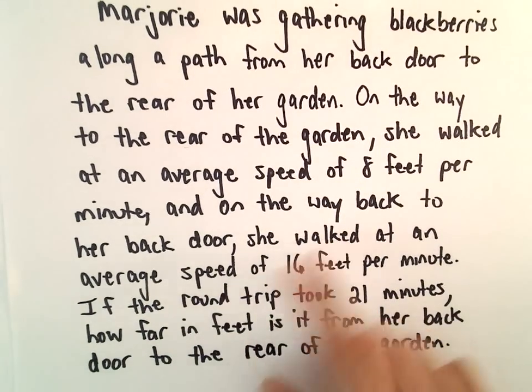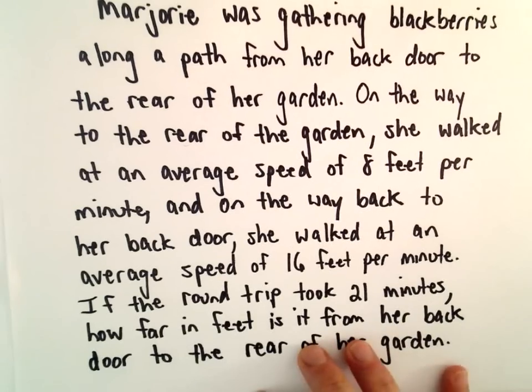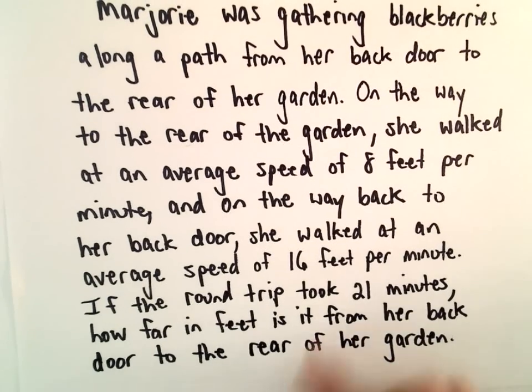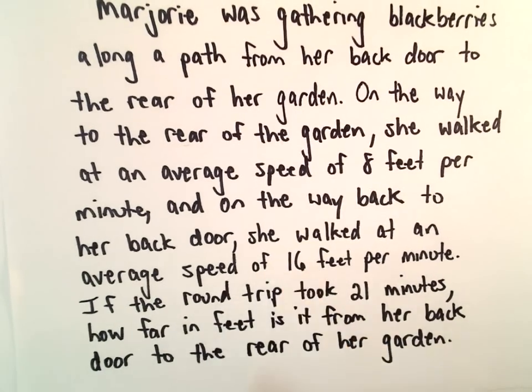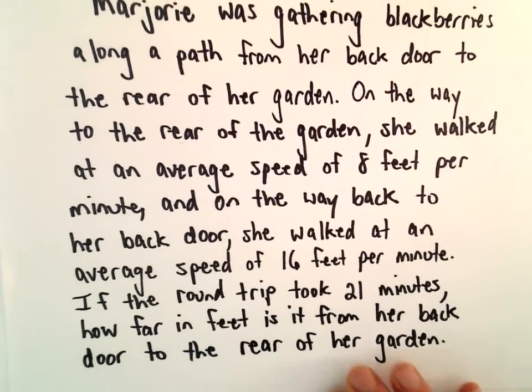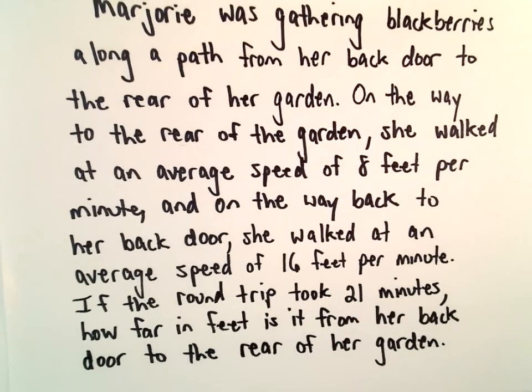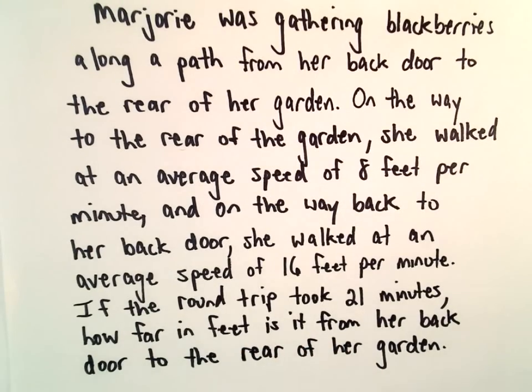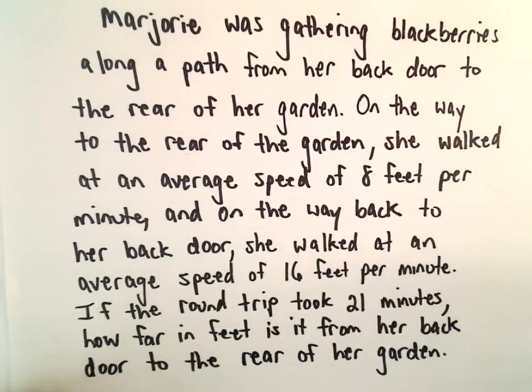And on the way back to her back door, she's got all of her blackberries, so she speeds it up, and she's going 16 feet per minute. If we know that she was out there for a total of 21 minutes, we want to know how far in feet is it from her back door to the back of the garden.